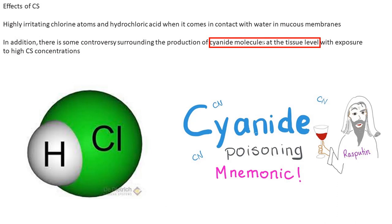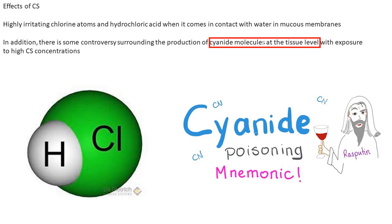CS or CN type particles are chemicals that can dissolve in the water present in your mucus membrane. The mucus membrane is a tissue-level structure containing water. These smoke particles dissolve there and produce hydrochloric acid in situ — built within your tissues — causing irritation, burning sensation, and increased tear production.